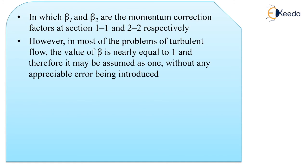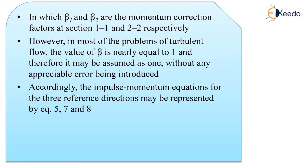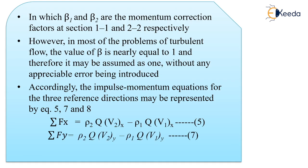However, in most problems of turbulent flow, the value of beta is nearly equal to 1, and therefore it may be assumed to be 1 without any appreciable error being introduced. Accordingly, the impulse momentum equations for the three reference directions x, y, and z may be represented by equation numbers 5, 7, and 8. That is, ΣFx = ρ₂·Q·V₂ₓ − ρ₁·Q·V₁ₓ. This is our fifth equation.